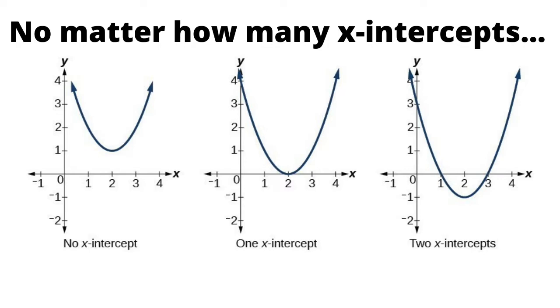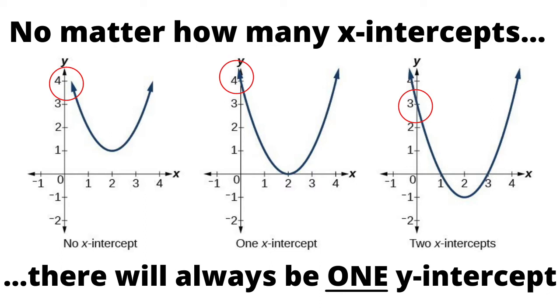Now, when we're looking at y-intercepts, we're looking at where it crosses the y-axis, so you'll notice in all three of these, it's going to cross at one point and one point only. So no matter how many x-intercepts, there are always going to be one y-intercept.